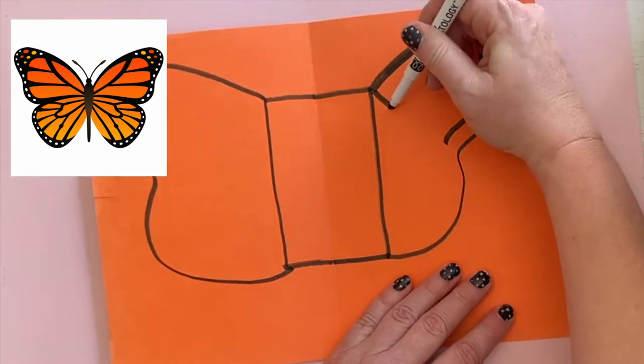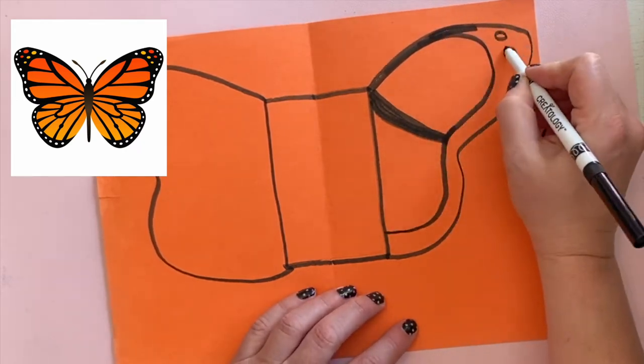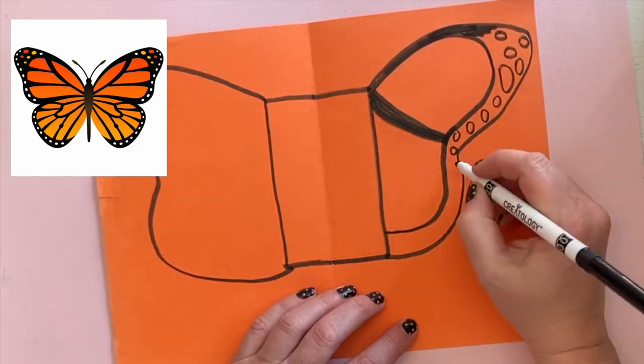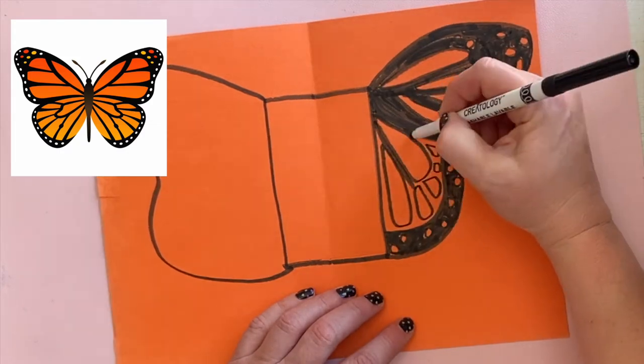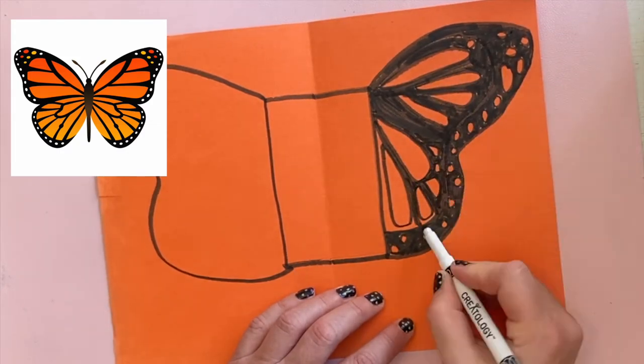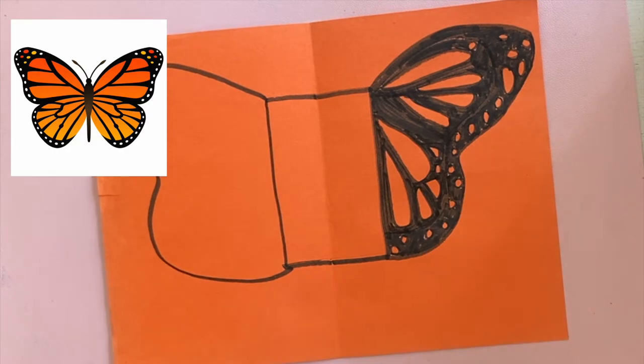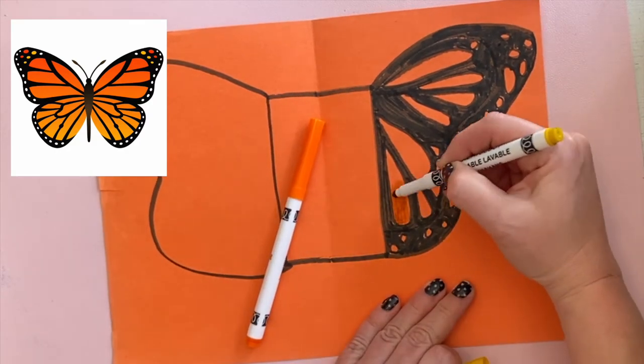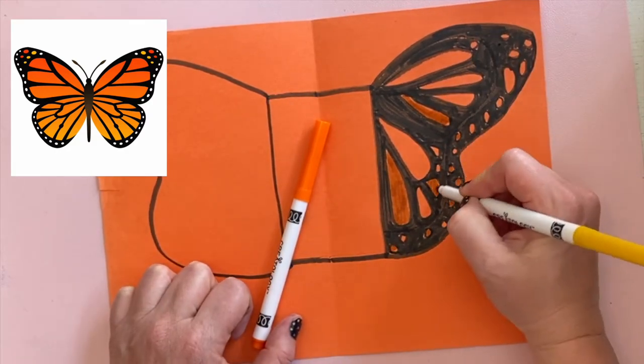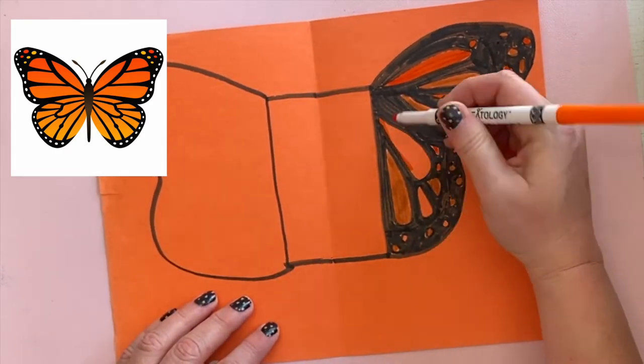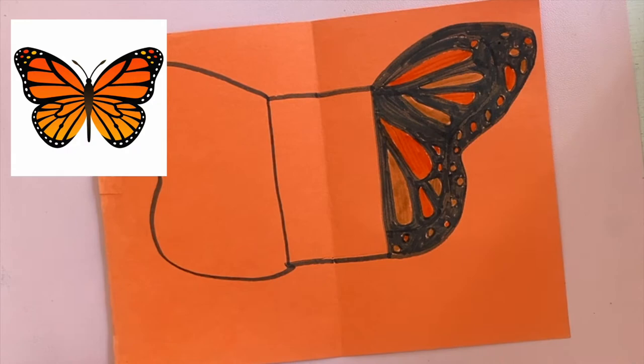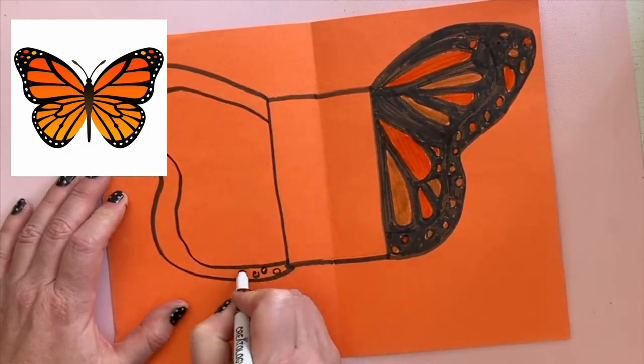The tips of the wings have black sections on them with small dots inside. Draw some small dots and some teardrop shapes in the center of the butterfly wing. Add some yellow in some sections and then some orange in other sections. Do the same thing on the other side.